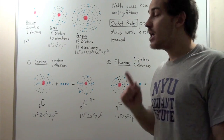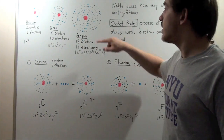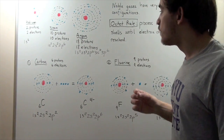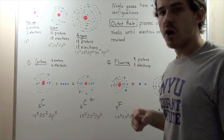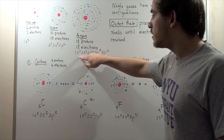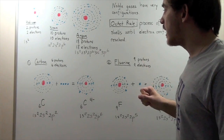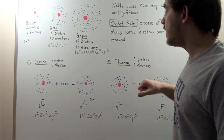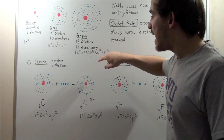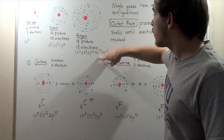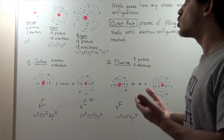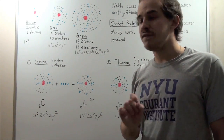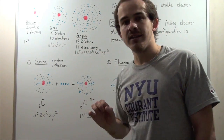Let's look at Argon. Argon has 18 protons found in the nucleus and 18 electrons found in the surrounding orbitals. We're going to have two electrons in the 1s orbital, two electrons in the 2s orbital, six electrons in the 2p orbital, two electrons in the 3s orbital, and six electrons in the 3p orbital. Once again, every orbital within Argon is completely filled, just like it was in Neon and Helium.